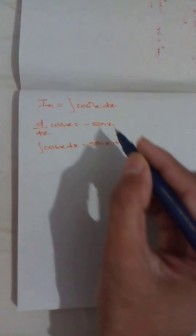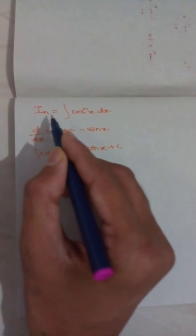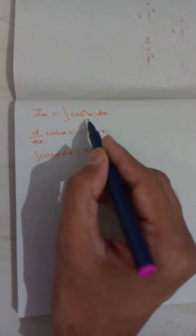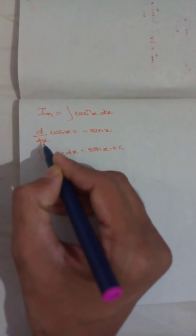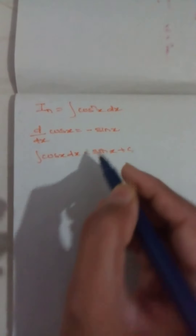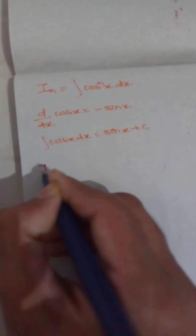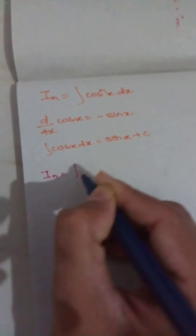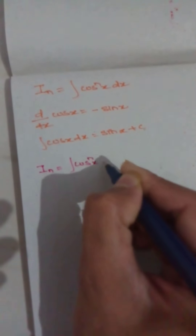Good evening. Today we are going to learn about the integral Iₙ = ∫cosⁿx dx, noting that d/dx of cos x is equal to minus sin x, and the integral of cos x dx is equal to sin x. Now, Iₙ is equal to ∫cosⁿx dx.